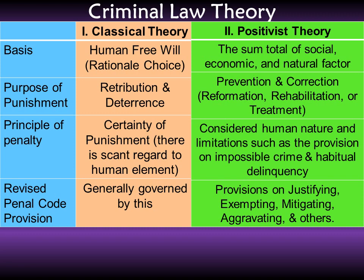The positivist criminal law believes in reformation and treatment, so that when offenders are reintegrated into the community they become well-rounded, law-abiding citizens. The principle of penalty in the positivist theory considers human nature — the limitations a person may have, such as mental conditions like insanity or psychosis. People with such conditions are given consideration by the law. Also, those who commit a crime that is not actually accomplished may still face a penalty, because the law looks upon circumstances such as the evil intent of the person to commit a crime even though he did not accomplish it.